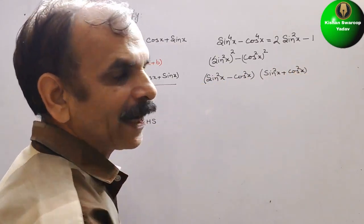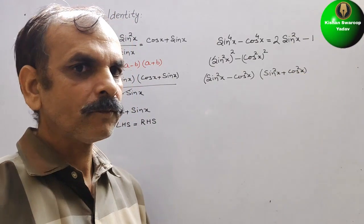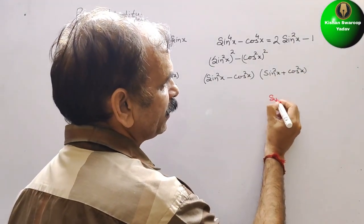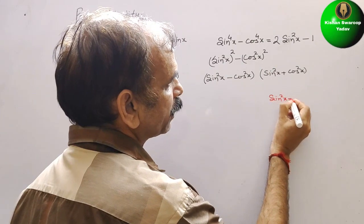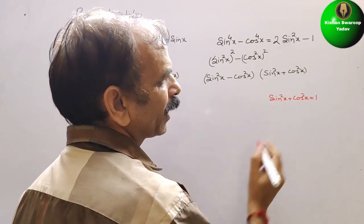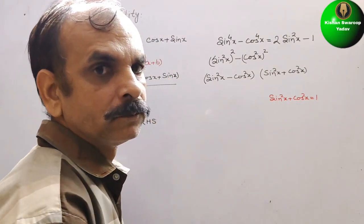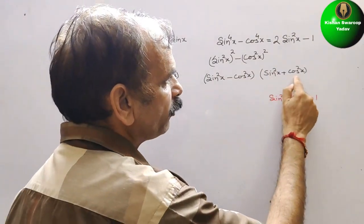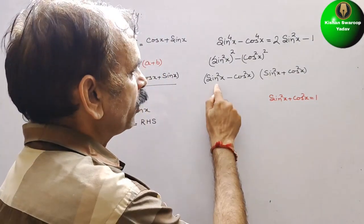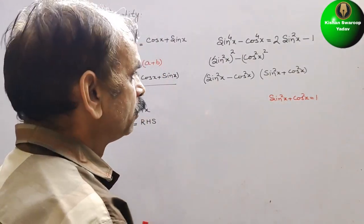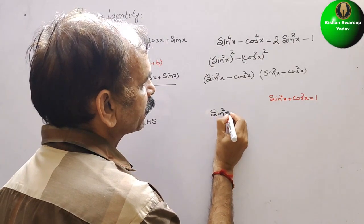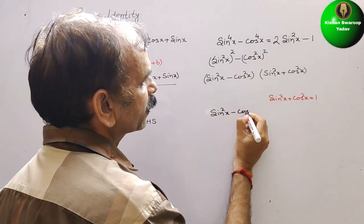We have one identity: sin squared x plus cos squared x is equal to 1. So that means this value will become 1. So now you are left with only sin squared x minus cos squared x.